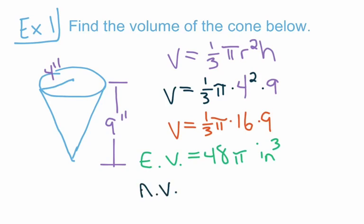To get our approximate volume, use your calculator and enter 48 times pi. If your calculator gives you 48 pi as a result, you need to change the mode to classic — come see me for help with that. When we take 48 times pi, we get approximately 150.8 inches cubed. So our exact volume is 48 pi inches cubed and our approximate volume is 150.8 inches cubed.